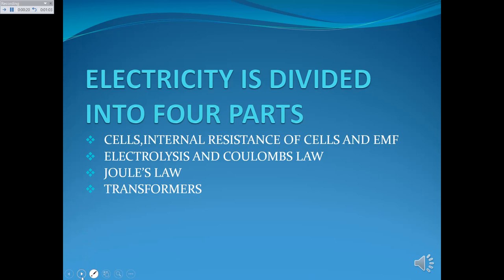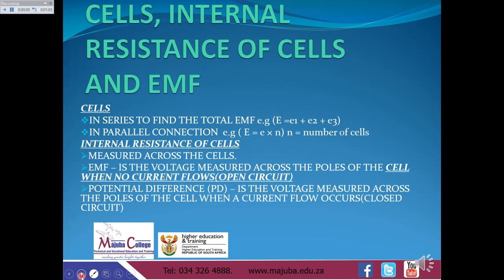Let's start with the first part that deals with cells, internal resistance of cells and the EMF. Here we have to calculate the total EMF for cells in series, where EMF will be equal to E1 plus E2 plus E3, depending on the number of cells that you have. This means that the total EMF for cells in series will be equal to the sum of the voltages in cells. And for the total EMF for cells in parallel, your EMF will be equal to the voltage in cells times by the number of cells.